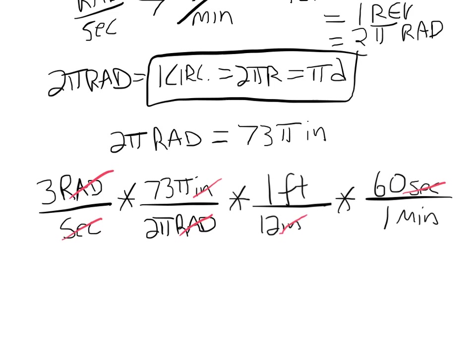3 times 73 times π times 60, and I can hit equals. It's 41,280.52747. Divide by 2 and hit equals. Now it's at 20,000. Now divide by π equals. Now it's at 6,570. Now divide by 12 equals. And I get 547.5. So this all gives me 547.5, and this is feet per minute.